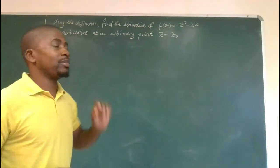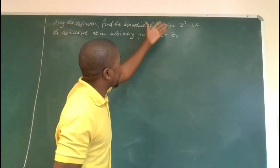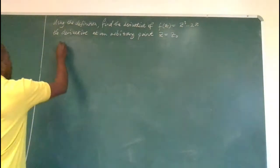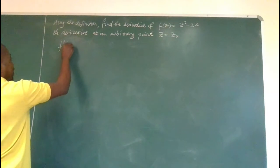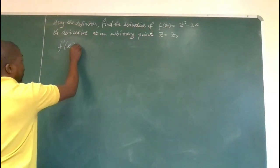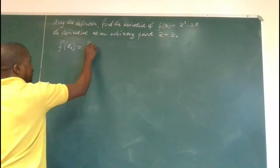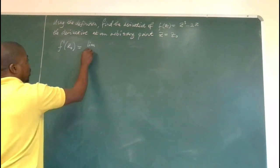Let the arbitrary point in our question be z naught. So the derivative of the given function at the arbitrary point z naught is given by definition from your previous knowledge. It's delta z, the limit as delta z approaches zero.